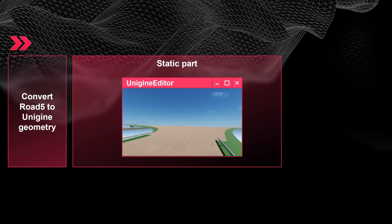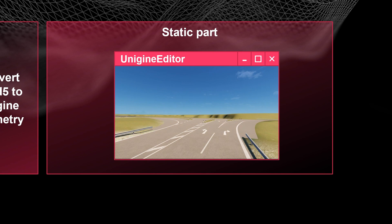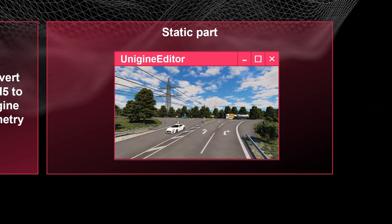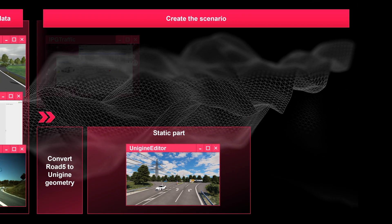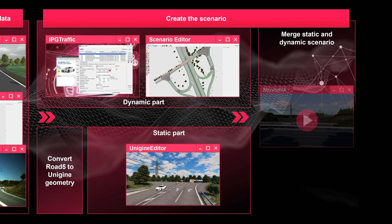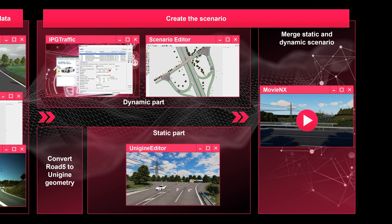First, the Rode 5 file is converted into a 3D geometry that is compatible with Unigine. Our 3D artists then use the Unigine editor to build a static scene around the road. In parallel, our engineers set up the dynamic part of the scenario and make sure that all the routes and paths are correct so that the IPG driver and our traffic objects are able to navigate the scene. Finally, the static and the dynamic parts are merged into one scenario.